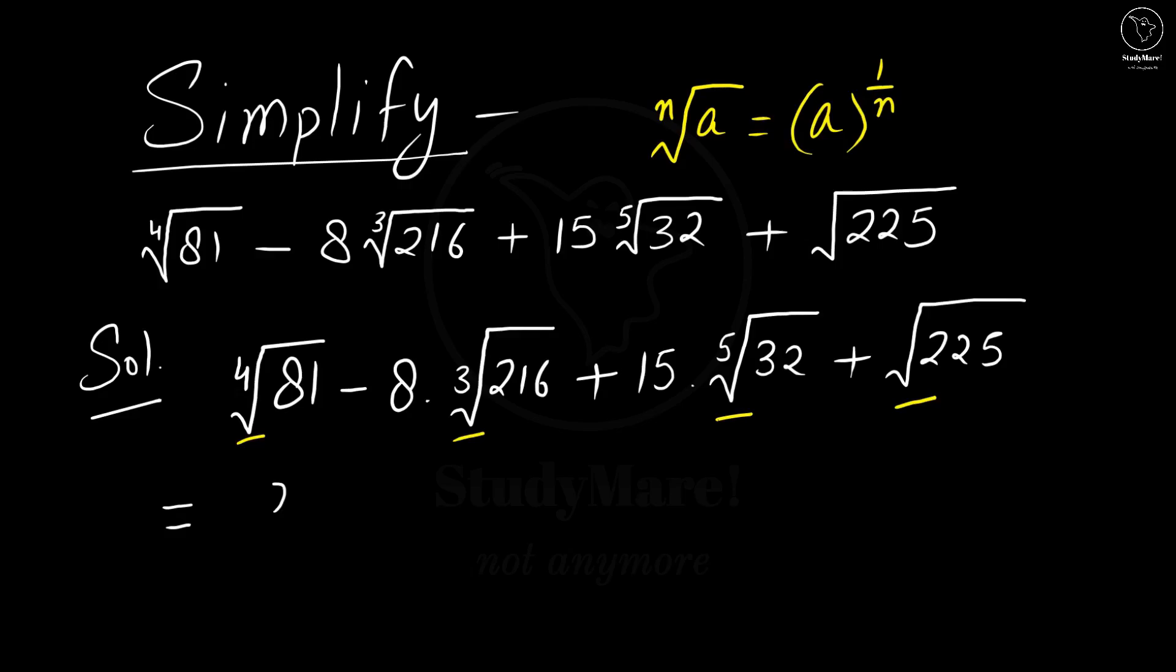This can be written as 81 to the power 1 by 4 since it is 4th root, minus 8 as it is into 216. Now, there is 3rd root, that means we can put it as 1 by 3, plus 15, no radicals so just write it as it is.